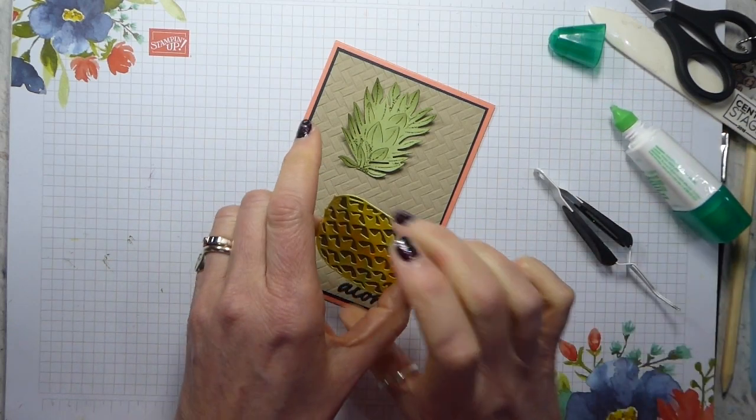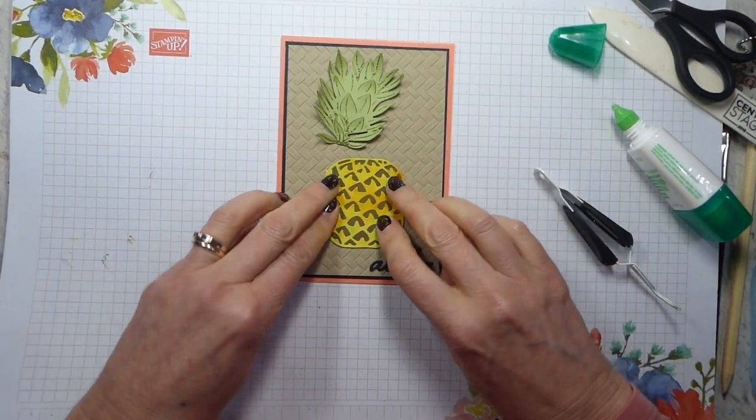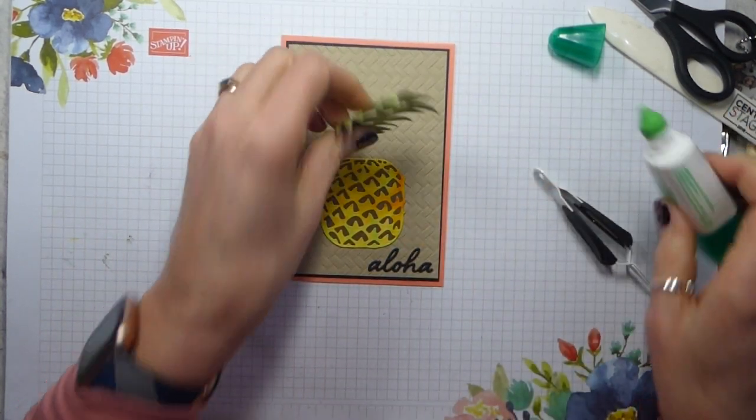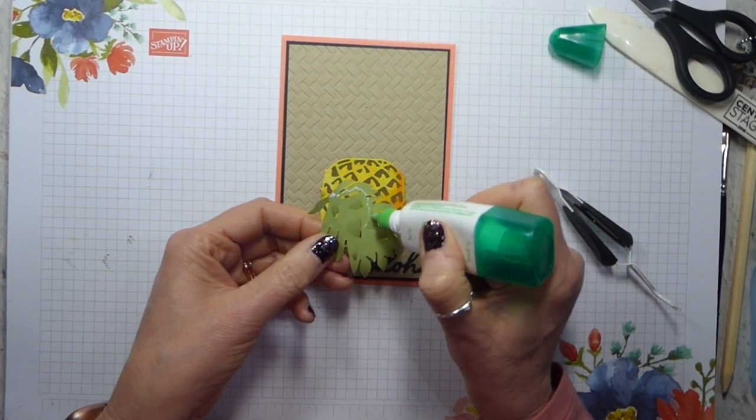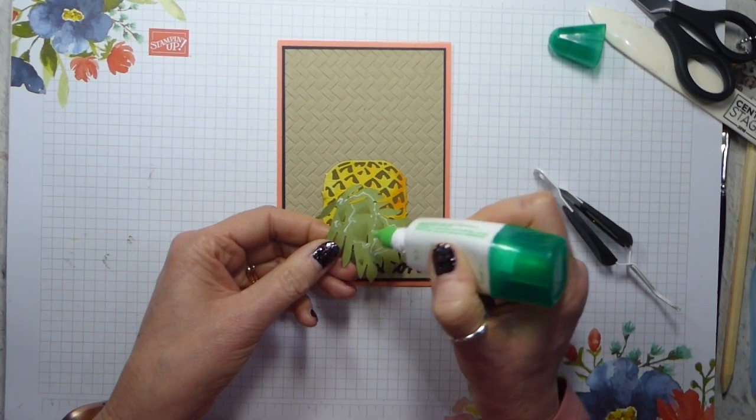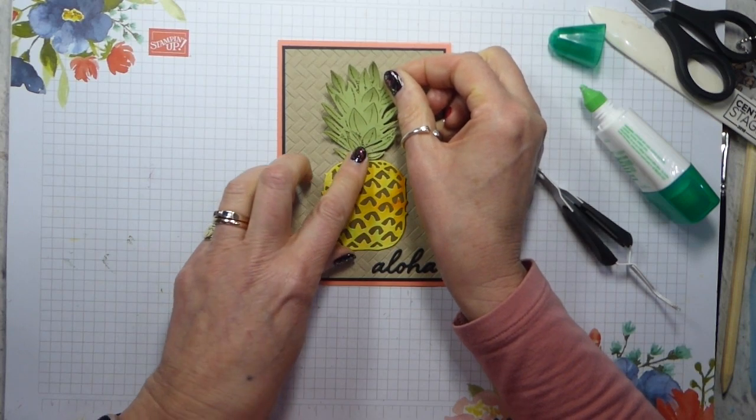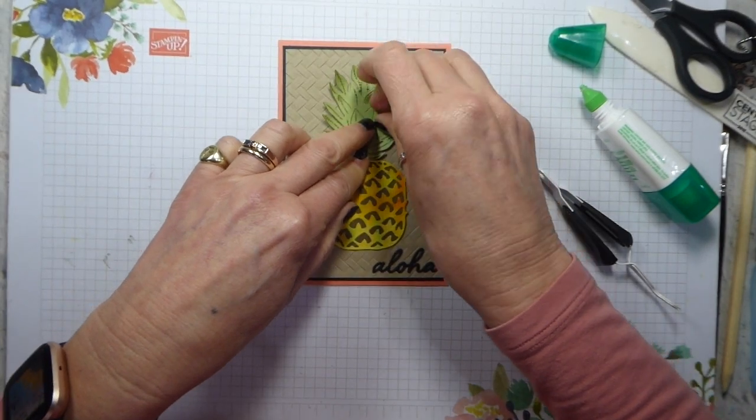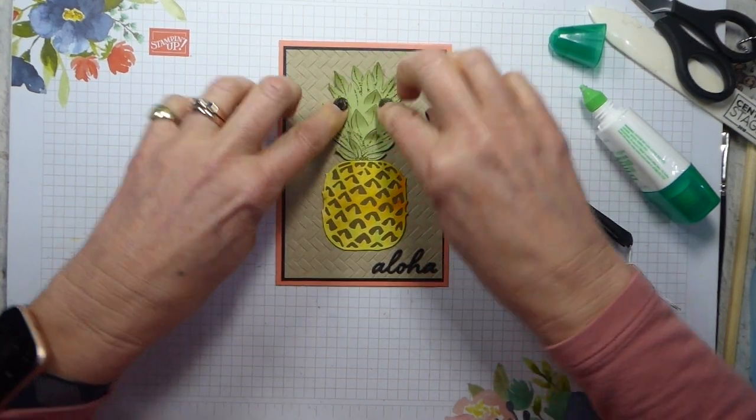So adhesive on my pineapple and pop that in the middle-ish, a middle this way, not this way. And then the leaves again, you don't need a huge amount just where it's going to touch. And pop that down. And then of course, lift up these bits again, because I've just pushed them down. There we go.